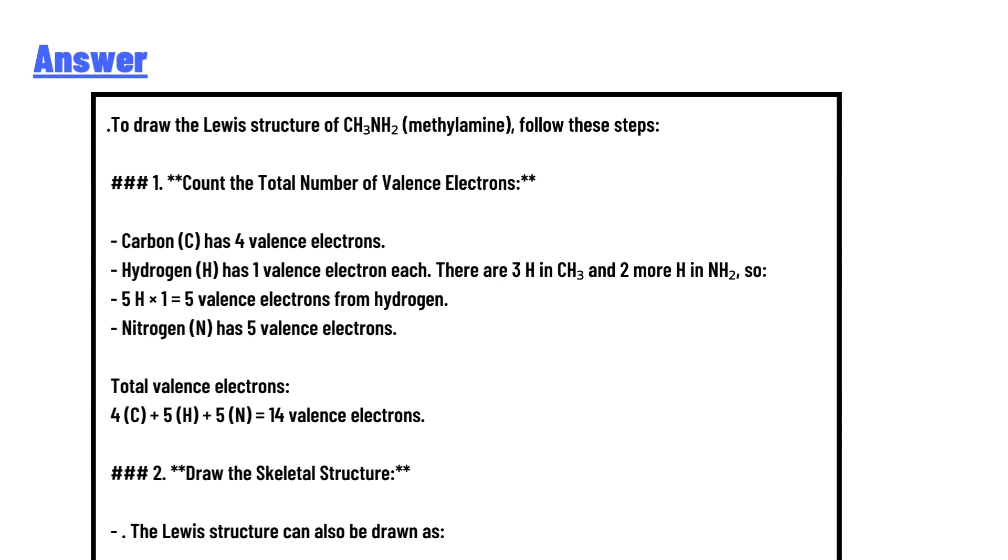Step 1: Count the total number of valence electrons. Carbon (C) has 4 valence electrons. Hydrogen (H) has 1 valence electron each. There are 3 hydrogen in CH3 and 2 more H in NH2, so 5 × 1 = 5 valence electrons from hydrogen.